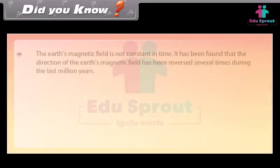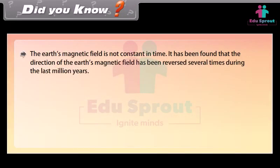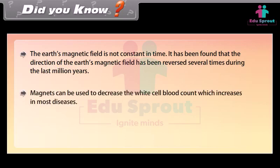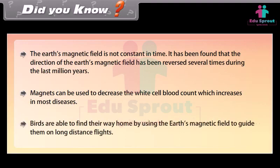Did you know: The Earth's magnetic field is not constant in time — the direction of the Earth's magnetic field has been reversed several times during the last million years. Magnets can be used to decrease the white blood cell count, which increases in most diseases. Birds are able to find their way home by using the Earth's magnetic field to guide them on long-distance flights.